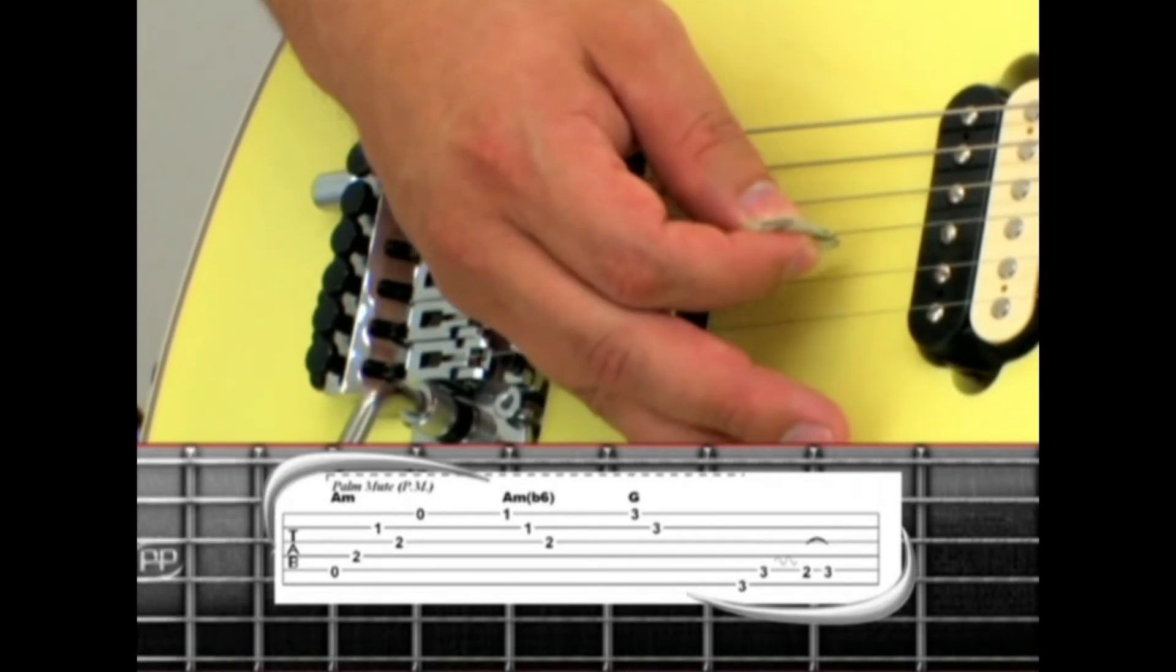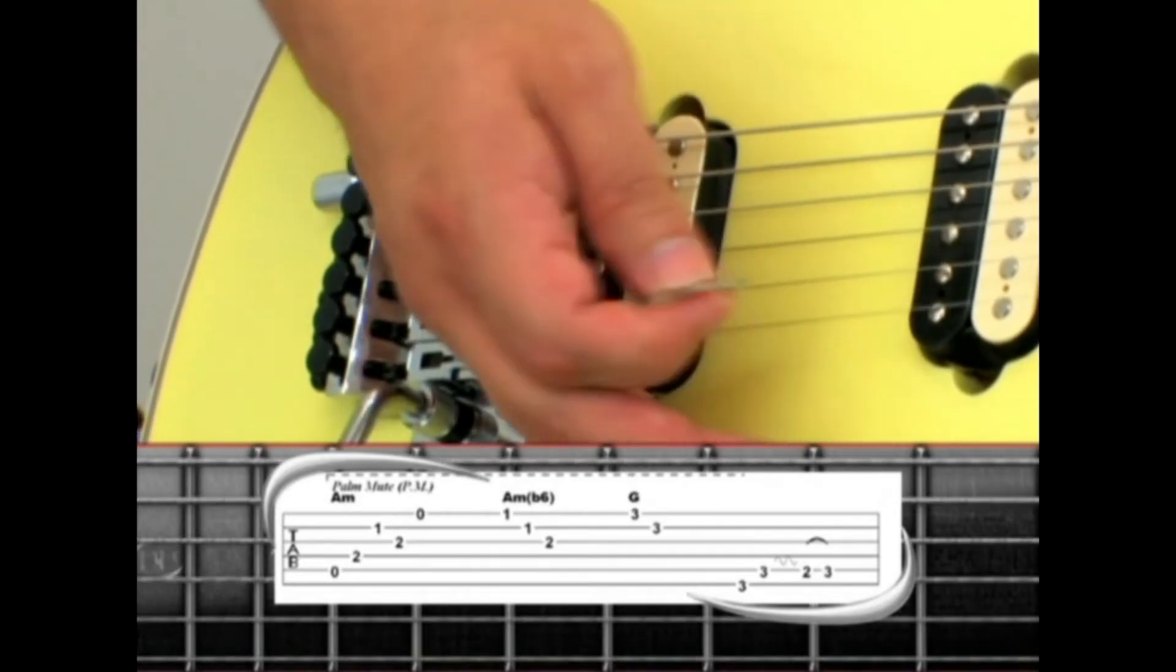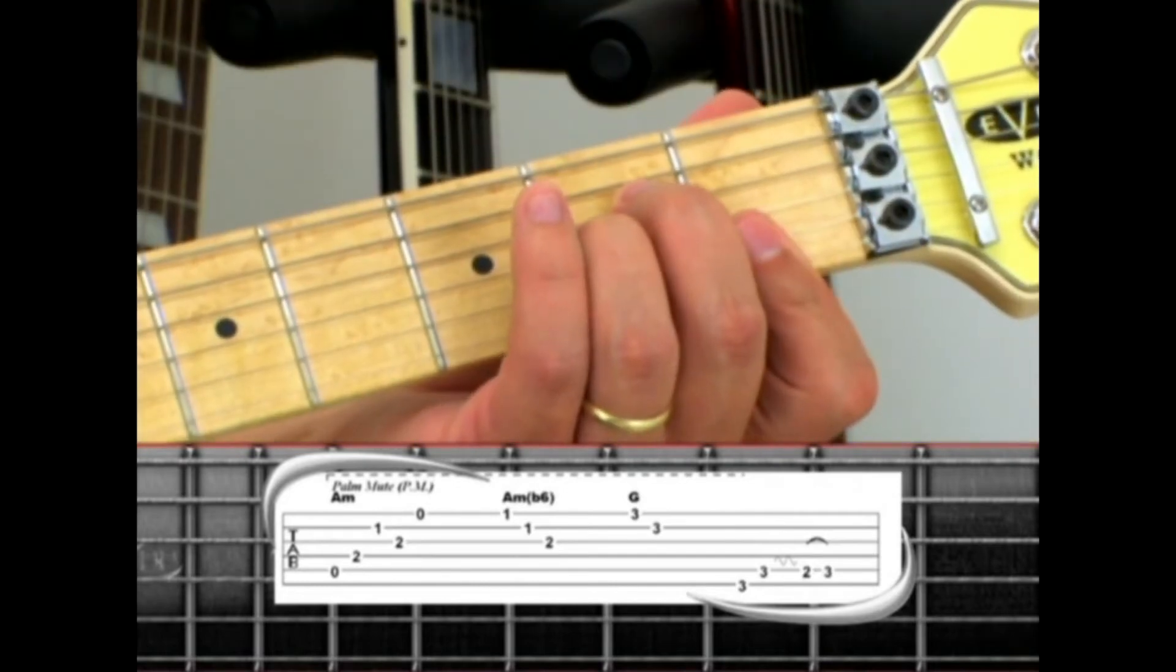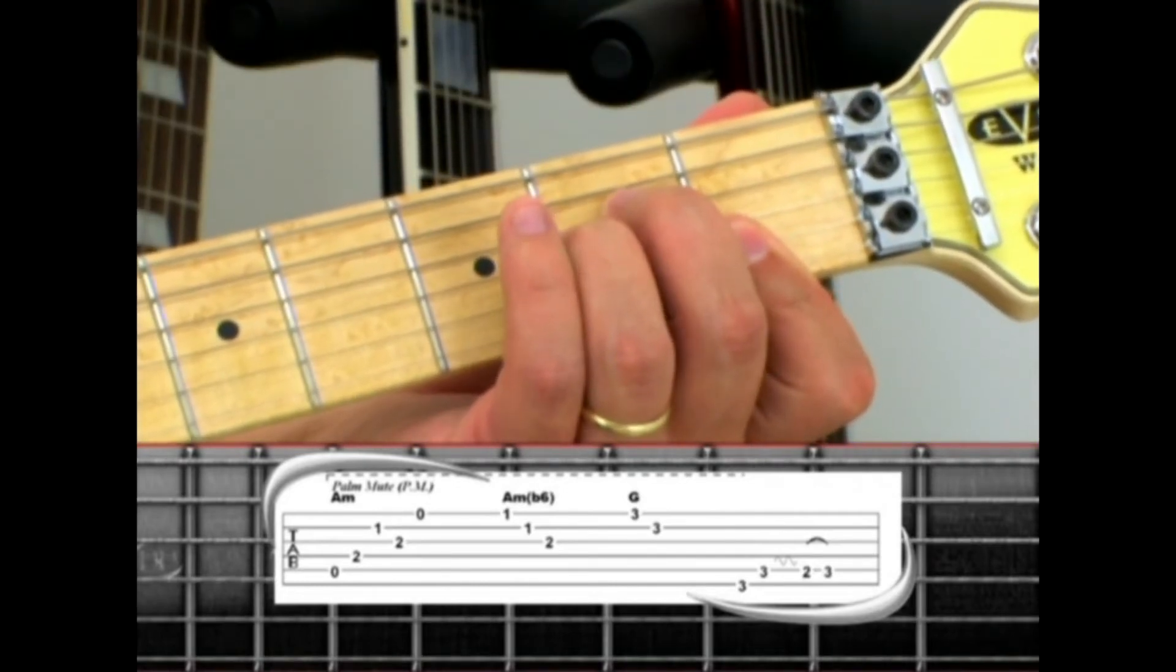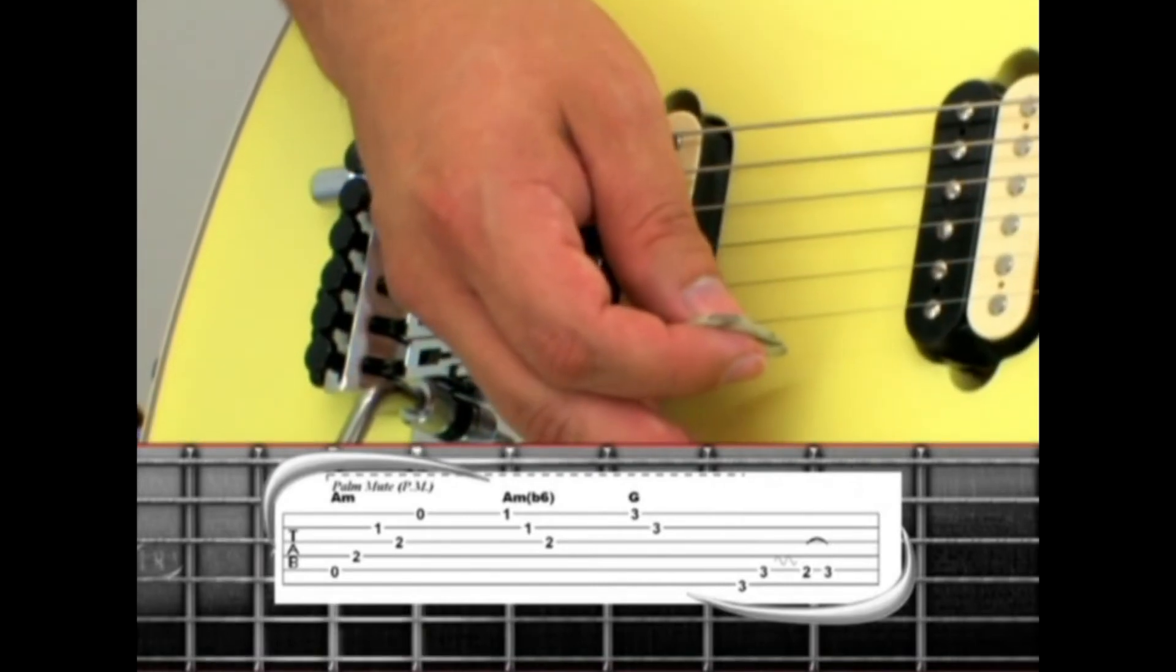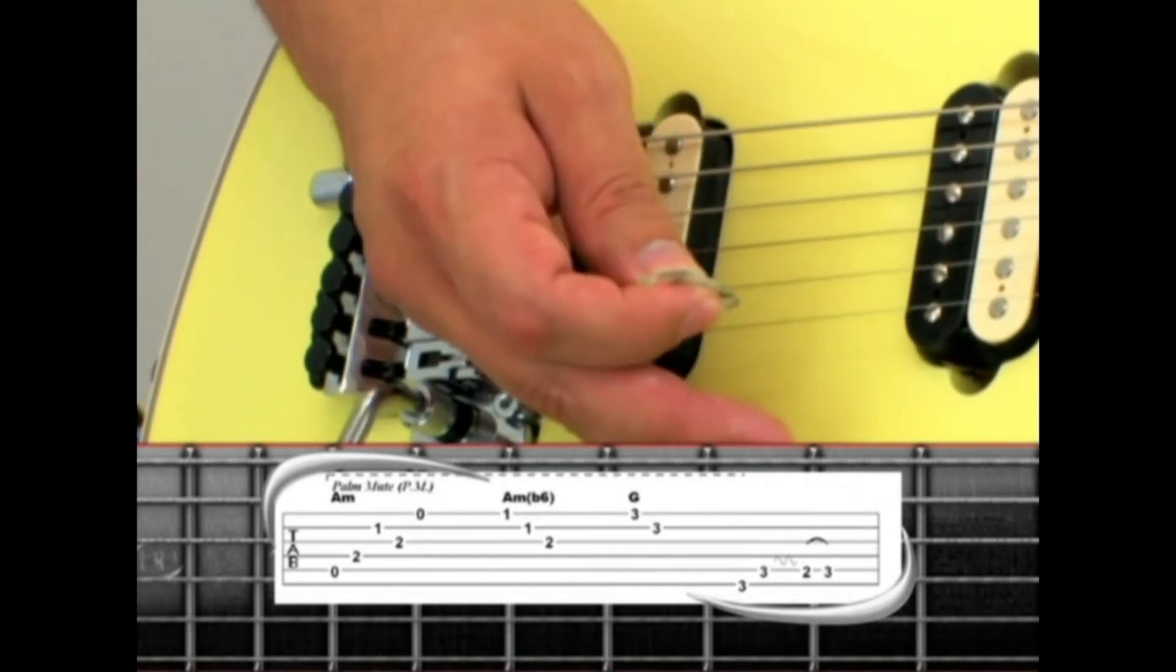one, switch to A minor flat six, barring the first fret of strings one and two with your index finger, and pick strings one, two, three.